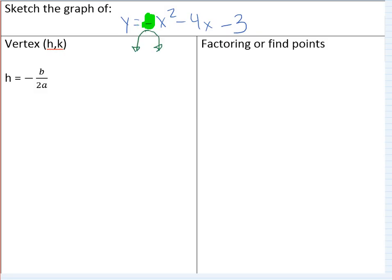So that means that our vertex is actually going to be a maximum. Now let's find it. So we're going to label y equals ax squared plus bx plus c. a is going to be negative 1, b is going to be negative 4, and we're not concerned with c at this point.